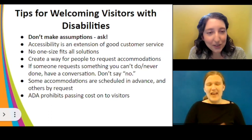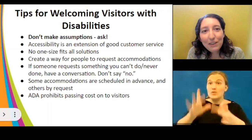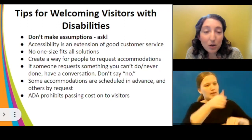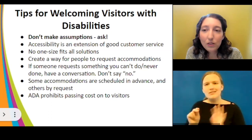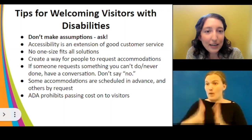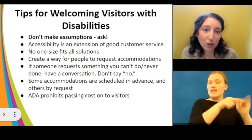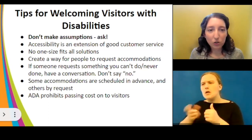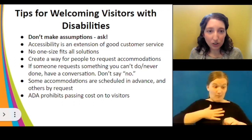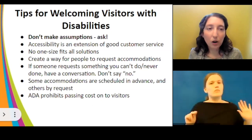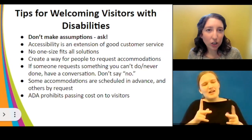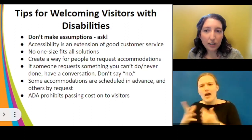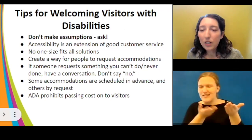If somebody contacts you requesting a specific accommodation — say, an ASL interpreter for an upcoming lecture — and you've never done it before, don't say no. If the person answering isn't the right one to make that decision, make sure they know who the access go-to person is. Always start a conversation and have a constructive discussion to figure out what the person needs and what's possible in your space. A lot more is possible than you might think, so explore it and give it serious consideration.